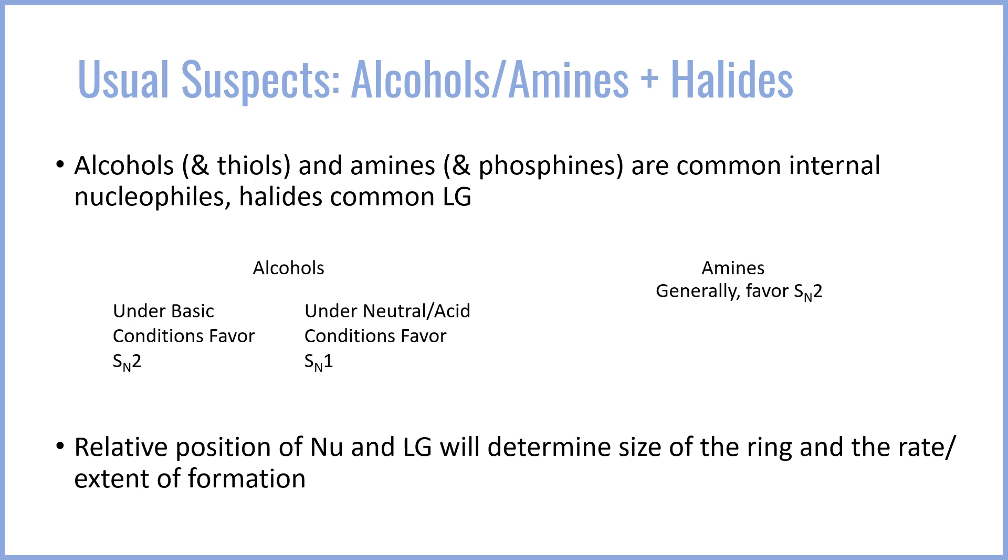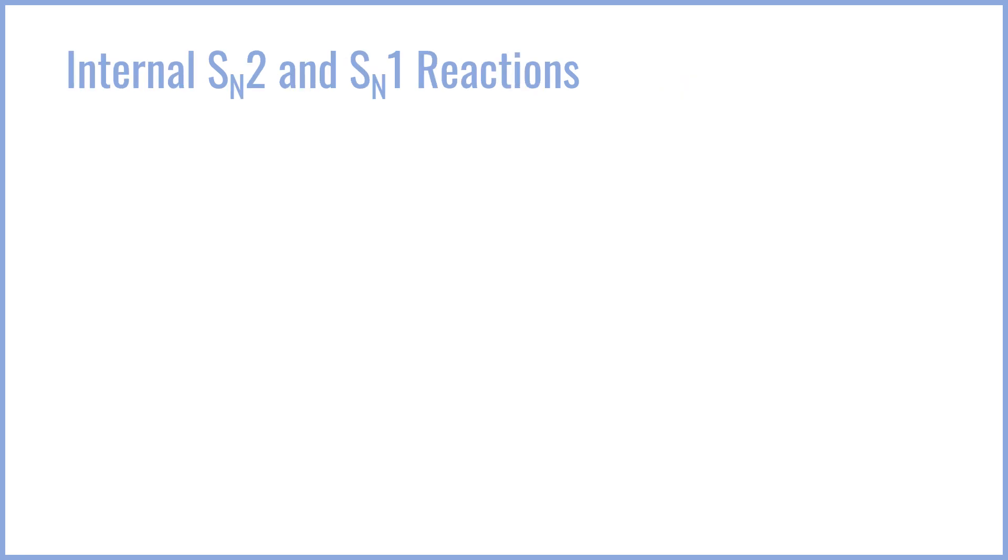Now the relative position of the nucleophile and the leaving group in the carbon chain is going to determine the size of the ring and the rate and how much of the ring is formed. There is an equilibrium between the closed form ring and the open straight chain form in the intramolecular nucleophilic substitution. I also want to point out that the regular restrictions for SN1 and SN2 apply. So you're never going to do an SN2 reaction on a tertiary leaving group even if it's intramolecular.